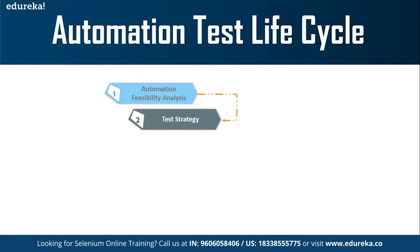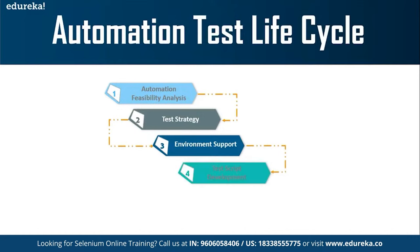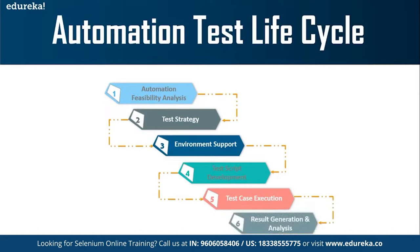The next step is environment setup, where you set up the testing environment and acquire the required hardware and software tools to execute the automated test cases. Then comes script development, where you start creating automation test scripts according to your requirements — make sure your scripts are reusable, well-structured, and well-documented. Next is case execution, where you execute your test cases. And finally, result generation and analysis — the last phase of the test automation lifecycle — where you analyze the output of test cases and share reports with stakeholders.